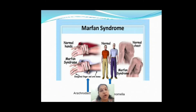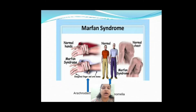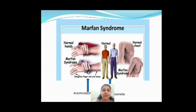The third deformity is thoracolumbar scoliosis — scoliosis means there will be extreme curvature of the spine. You may have heard of related terms: scoliosis, lordosis, kyphosis, and kyphoscoliosis — all referring to extreme curvature of the spine.